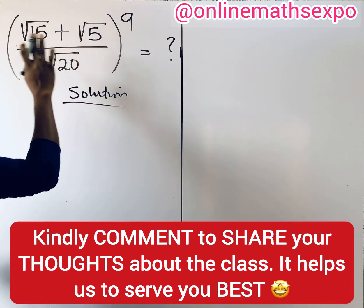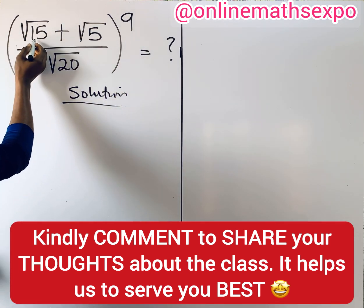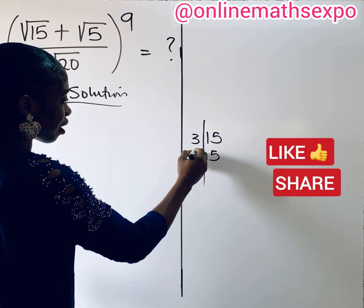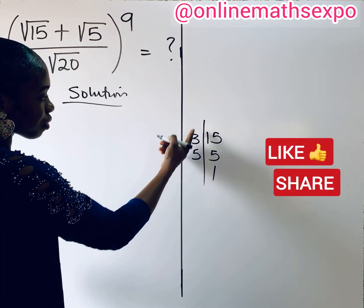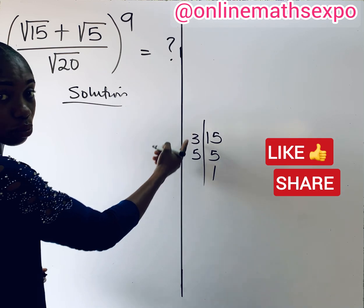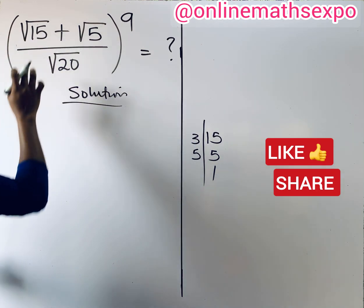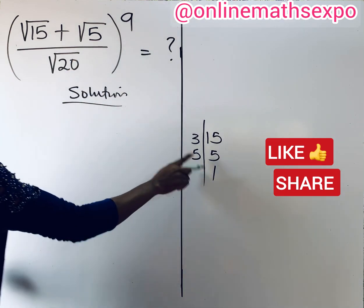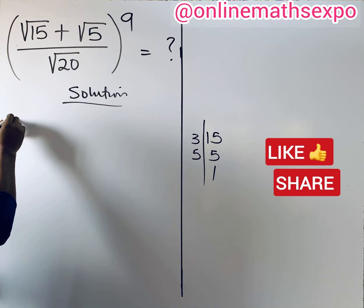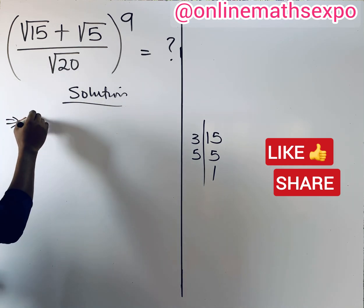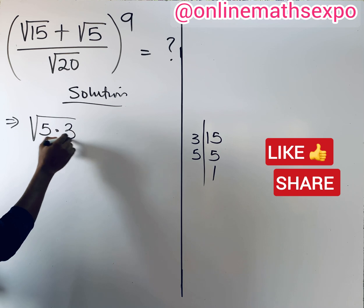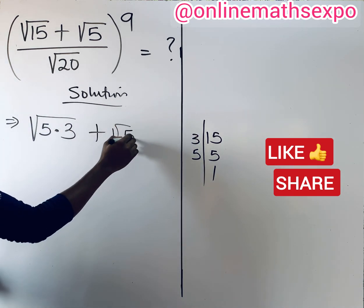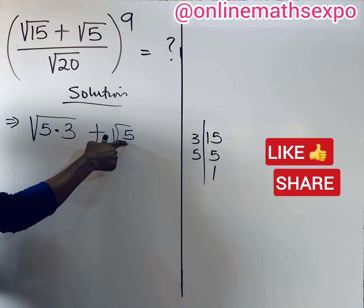For the inside, we have √15. Let's divide: 3 can divide 15 to give 5, and 5 divides to 1. You observe that nothing is repeated — nothing to be paired — so this is what we call a prime surd. Notwithstanding, we can choose to split it: we rewrite √15 as √5 × √3. Then we also have plus √5. This is the lowest form; nothing can go into it again.